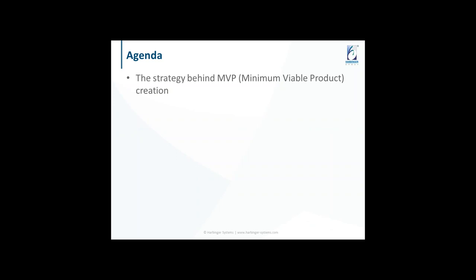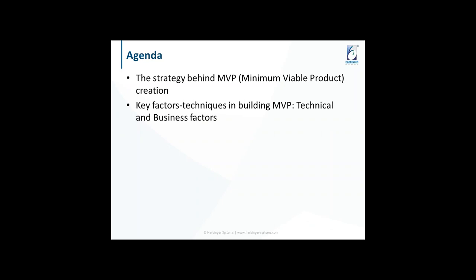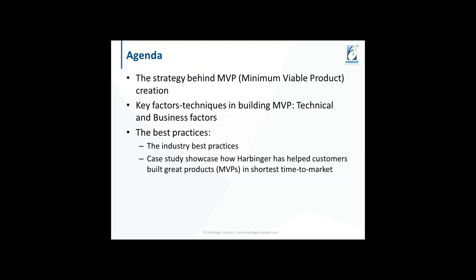We will run through the agenda first. We will start with the strategy behind a minimum viable product creation, then move on to the key factors and techniques in building an MVP, covering both technical and business factors. In the best practices section, we will talk about industry best practices, then move on to a case study showcasing how Harbinger has helped customers build great products in the shortest time to market. This will be followed by a special offer for webinar attendees and then the question and answers.